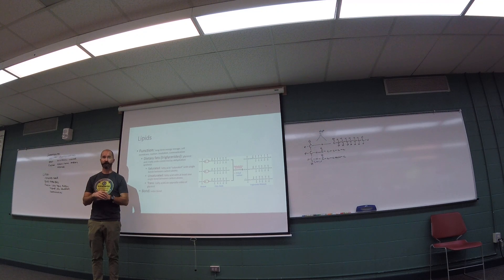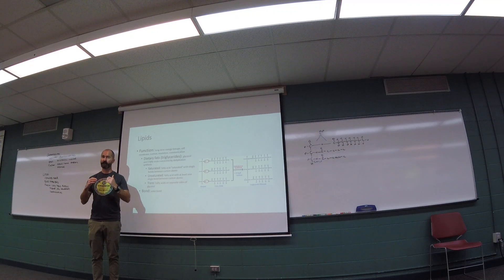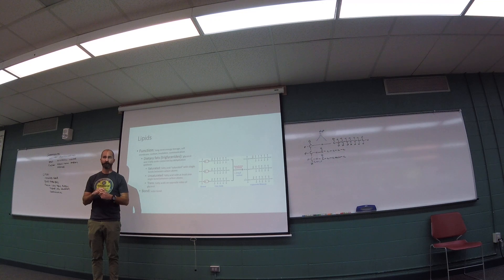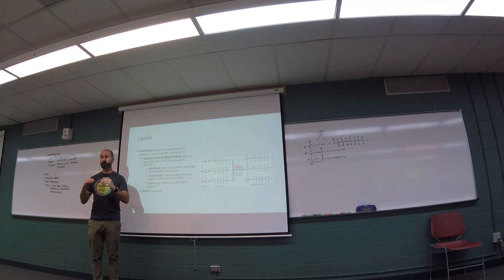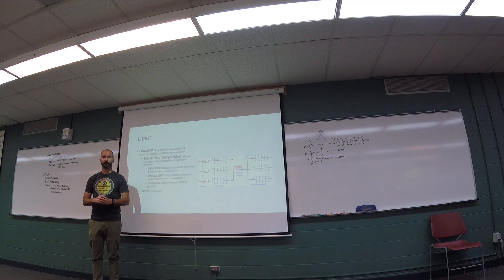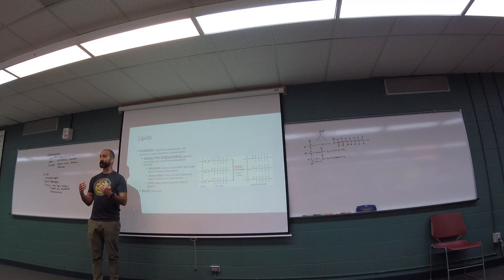Butter. Butter is a really good example of that. Can you think of others? Bacon grease. Bacon grease is another really good example of that. And where do we get bacon grease from? Where do we get bacon from? Pigs, which is an animal. Where do we get butter from? Cows, which is an animal. Generally speaking, the fats that we get from animals are saturated. The fats that we get from plants are unsaturated.